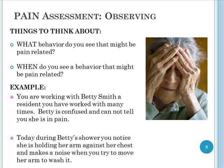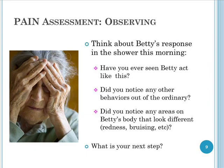Here's an example. Betty Smith is a resident you've worked with many times, but she's very confused and unable to communicate whether or not she's hurting. During Betty's shower, you notice she's holding her arm against her chest and makes a noise whenever you try to move it to wash under it. Think about Betty's response: have you ever seen Betty act like this before? Did you notice any other out-of-the-ordinary behaviors? Are there areas of redness or bruising that could indicate injury? This is all part of being a good observer and putting together this information.